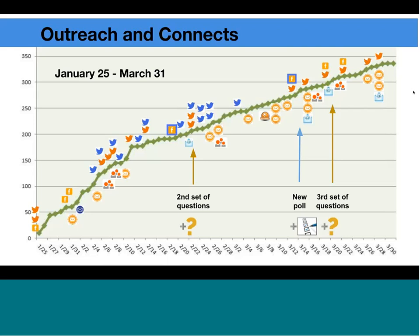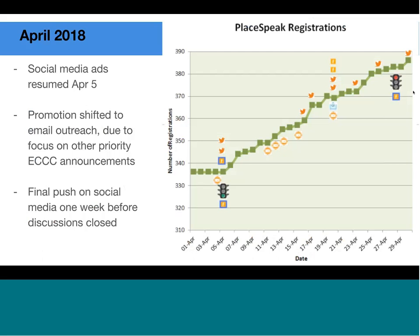You can see how registrations flattened out when we weren't running Facebook ads, and when the ads resumed, registrations went up again. There was a period of a couple of weeks where very few tweets were sent out by our department because other priority announcements were going on at the time, but we were continuing to send out emails to stakeholders. Through the reach of the ads, we were able to continue getting registrations right through till the day that we closed our citizen engagement.